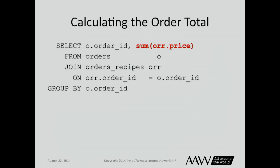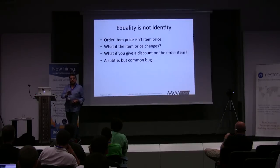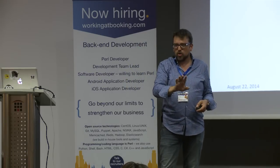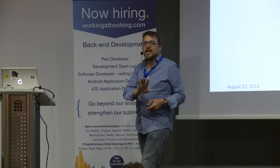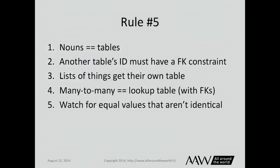Your SQL becomes simpler because now you just sum the price off the order item table. Rule number five: watch for equal values that aren't identical. The price could change — someone comes up with a bashed item wanting a 50% discount. You can't record that unless you copy the price to the order item table to record the price at the time of purchase. When moving something from abstract to a concrete right-now representation — especially when a timestamp is critically important — that's a good indicator you need to copy that data.